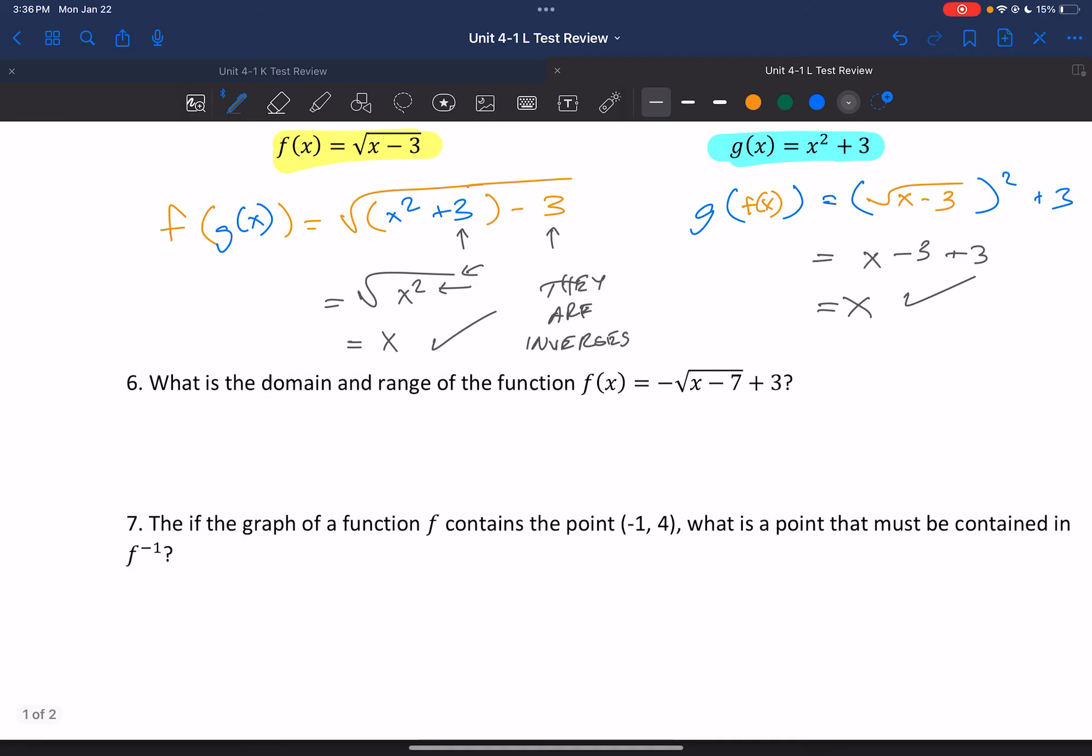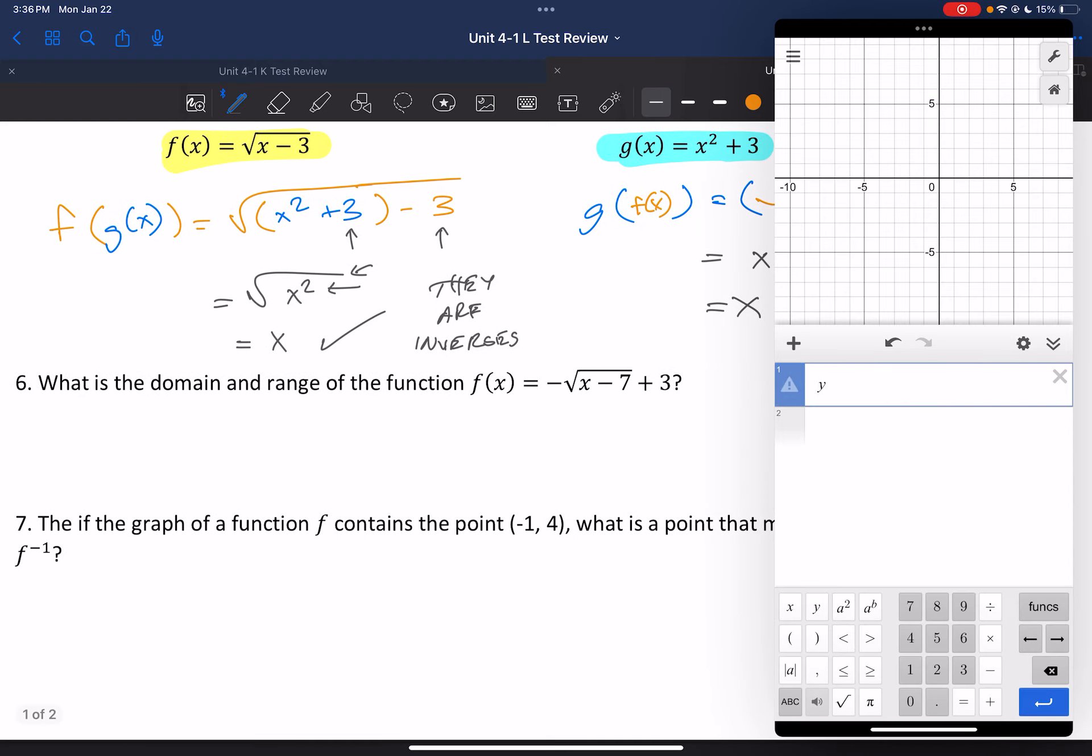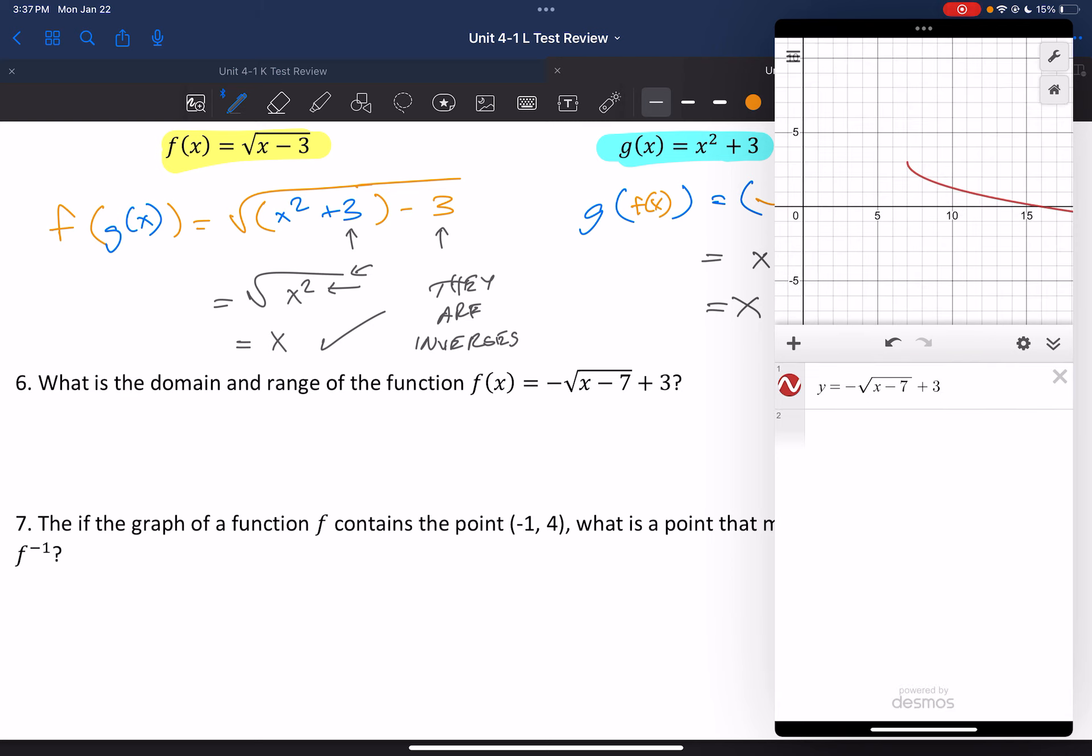All right, what's the domain and range of this function? Graph it. So let's start with this. y equals negative square root x minus 7 plus 3. Now it looks like here we are starting at 7, 3. So our domain is starting at 7. Our range is starting at 3. Domain is going to the right, so that's toward positive numbers, bigger numbers. So 7 to infinity. Range is going down, so it's going to smaller numbers, negative infinity. So we'll put the negative infinity first. Another way of writing this is x is greater than or equal to 7 and y is less than or equal to 3.